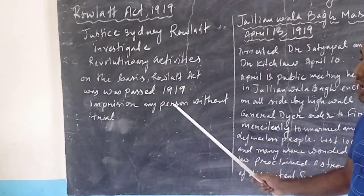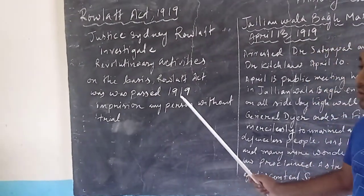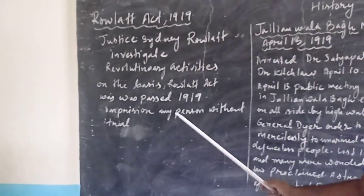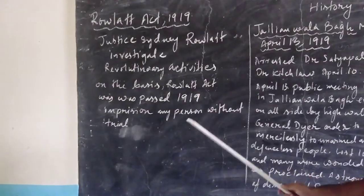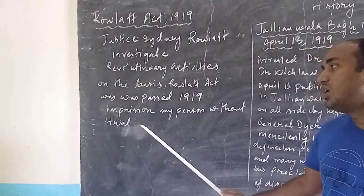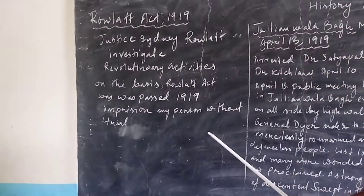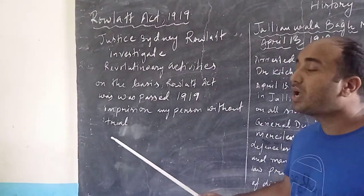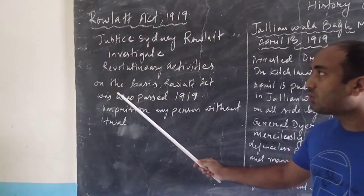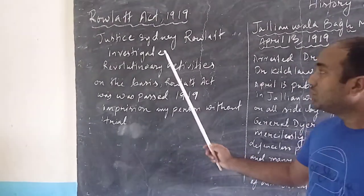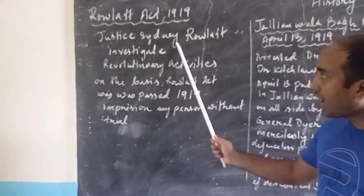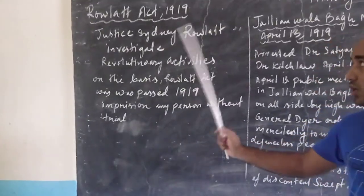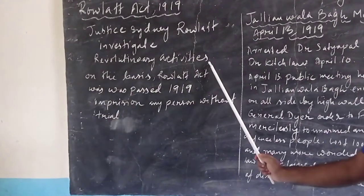According to the Rowlatt Act, those who were found violating the rules and regulations — reporting against the British or doing revolutionary activities against the British — they would be imprisoned without trial. Trial means without any evidence, they could be put behind bars. So that was the Rowlatt Act, a famous act passed during the time of British rule.